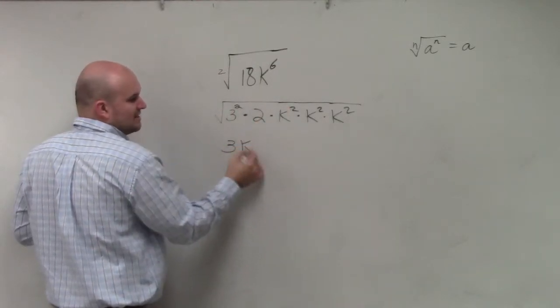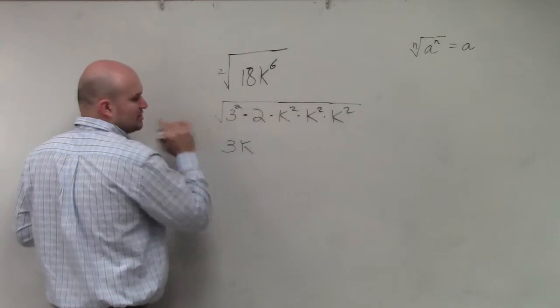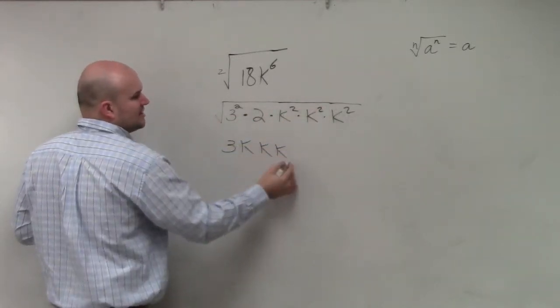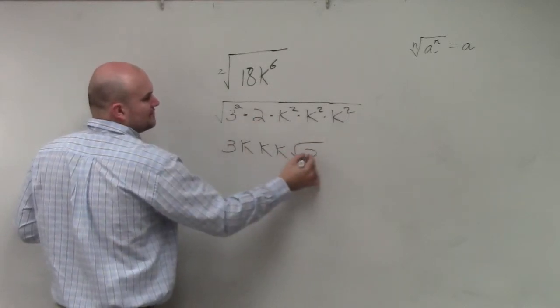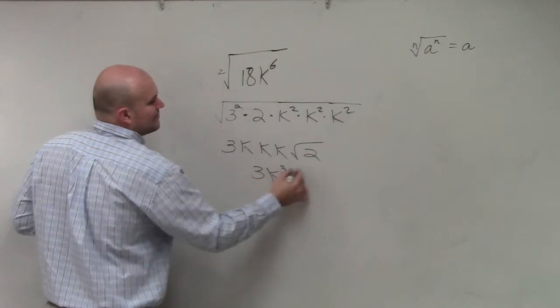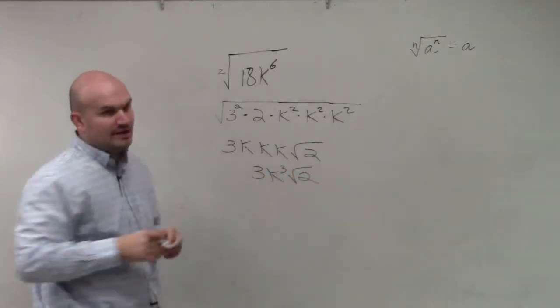Square root of k squared is k, square root of k squared is k, square root of k squared is k. Then I have square root of 2. k times k times k is k cubed, which would be my final answer.